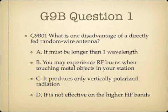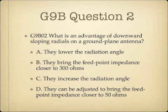Question 1: What is one disadvantage of a directly fed random wire antenna? A. It must be longer than one wavelength. B. You may experience RF burns when touching metal objects in your station. C. It produces only vertically polarized radiation. Or D. It is not effective on higher HF bands. Question 2: What is an advantage of downward sloping radials on a ground plane antenna? A. They lower the radiation angle. B. They bring the feed point impedance closer to 300 ohms. C. They increase the radiation angle. Or D. They can be adjusted to bring the feed point impedance closer to 50 ohms.